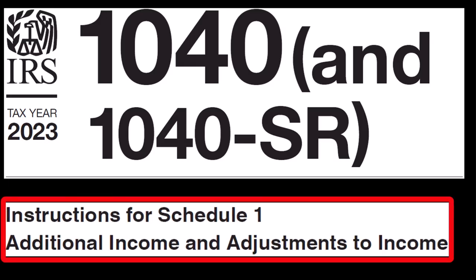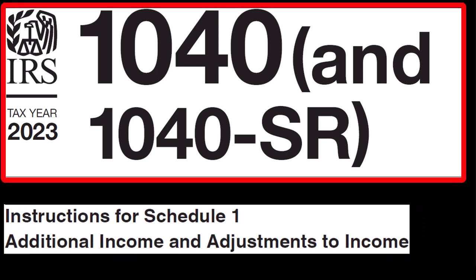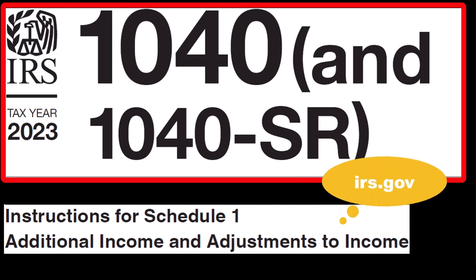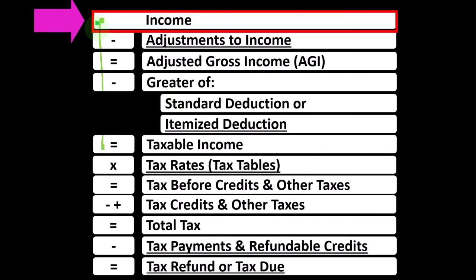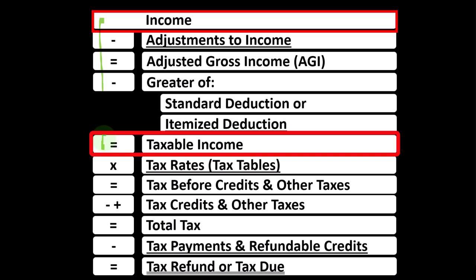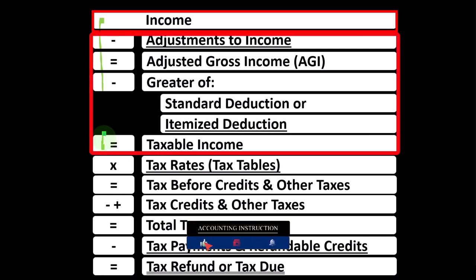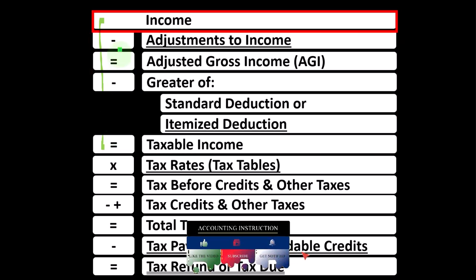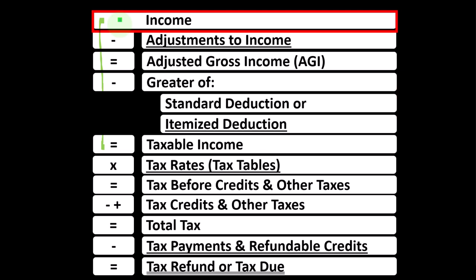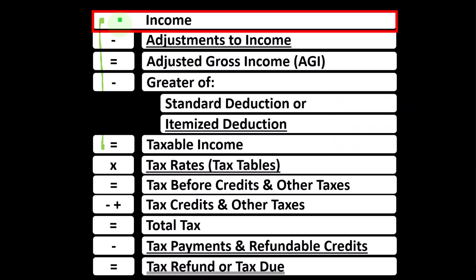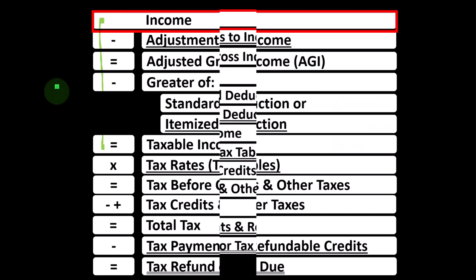Most of this information can be found in the instructions for Schedule 1 of the Form 1040 instructions for tax year 2023, which you can find on the IRS website at irs.gov. Looking at the income tax formula, we're focused on line one — income. Remember, the first half of the income tax formula is basically a strange income statement. Most income statements have income minus expenses resulting in net income; here we have income minus various deductions resulting in taxable income. For taxes we want income as low as possible, so we're looking for items that might be exempt. Also note that some income items might be taxed at more favorable rates — for example, qualified dividends or long-term capital gains.